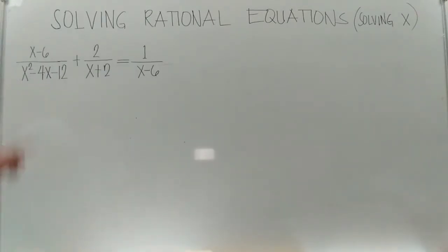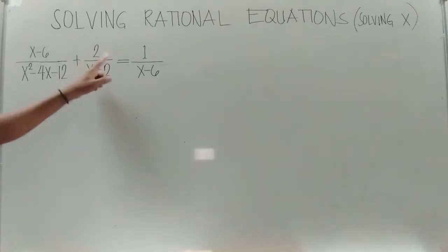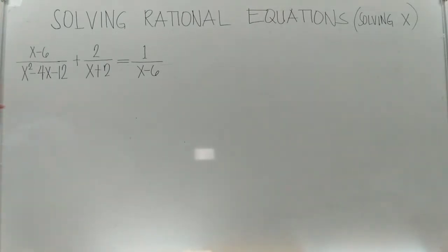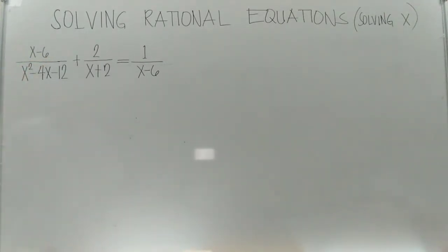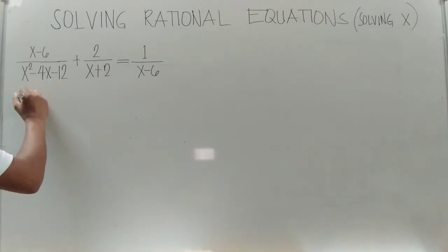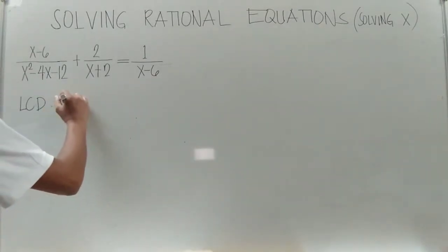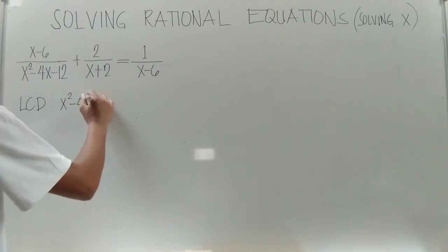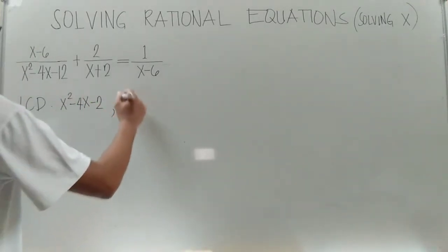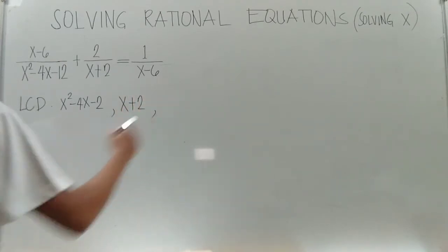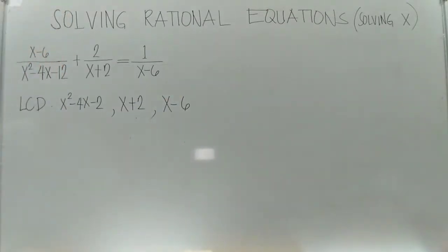For our next example, we have: (x minus 6) over (x squared minus 4x minus 12) plus 2 over (x plus 2) equals 1 over (x minus 6). First step is to identify your LCD by looking at our denominators: x squared minus 4x minus 12, then x plus 2, then x minus 6.